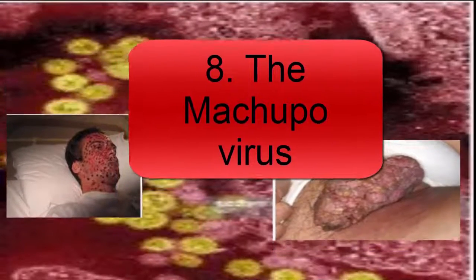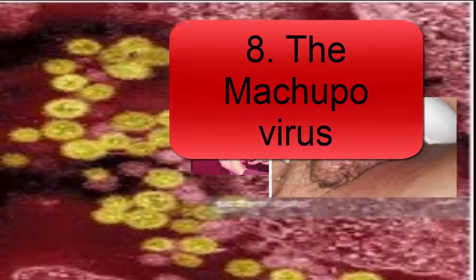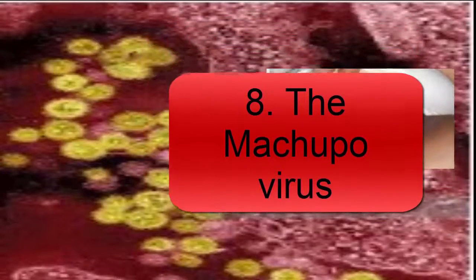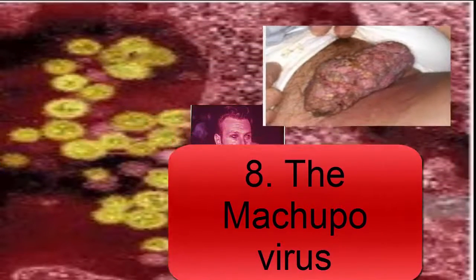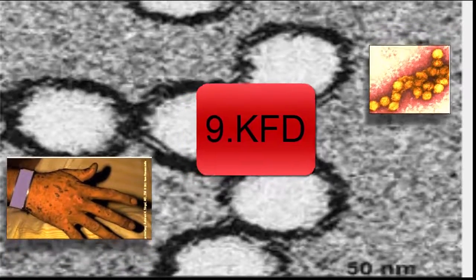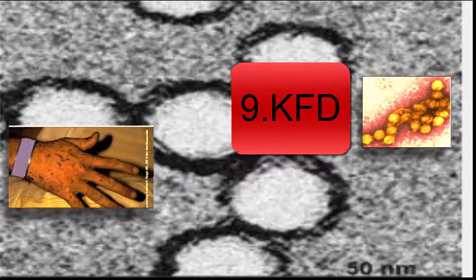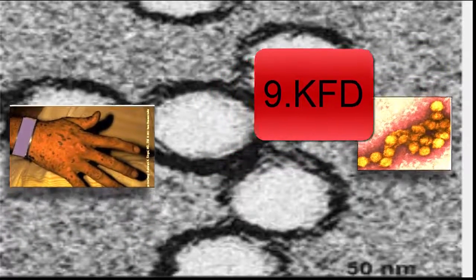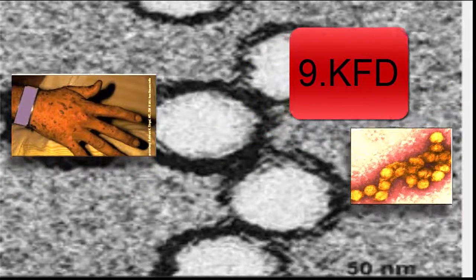Bolivian hemorrhagic fever, also known as black typhus, causes high fever accompanied by heavy bleeding. Number nine: scientists discovered the Kyasanur Forest Disease virus in woodlands on the southwestern coast of India in 1955.